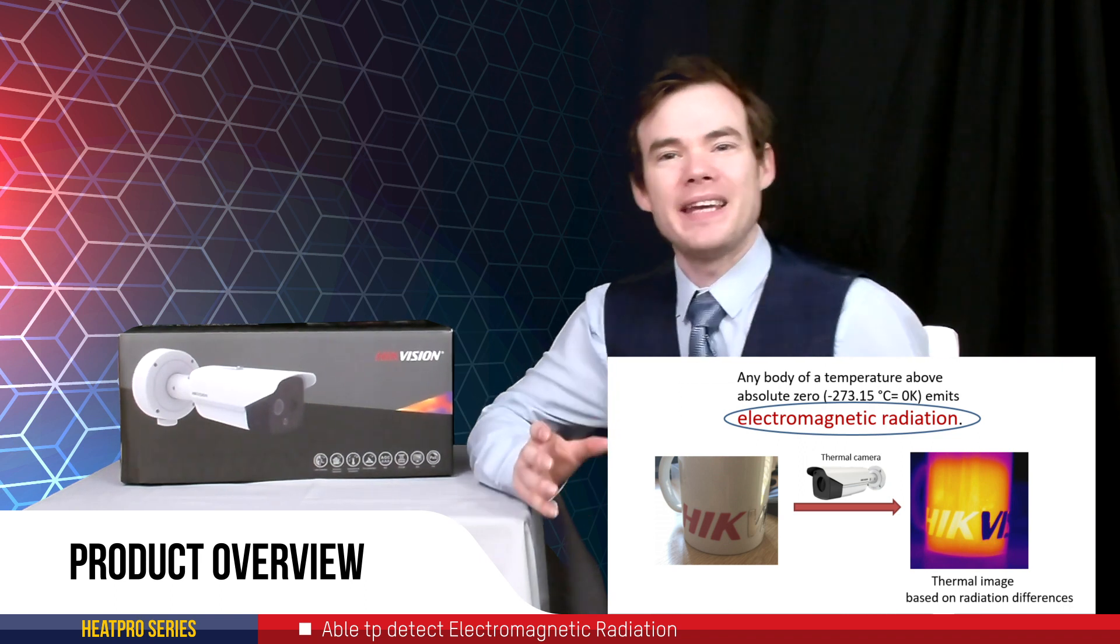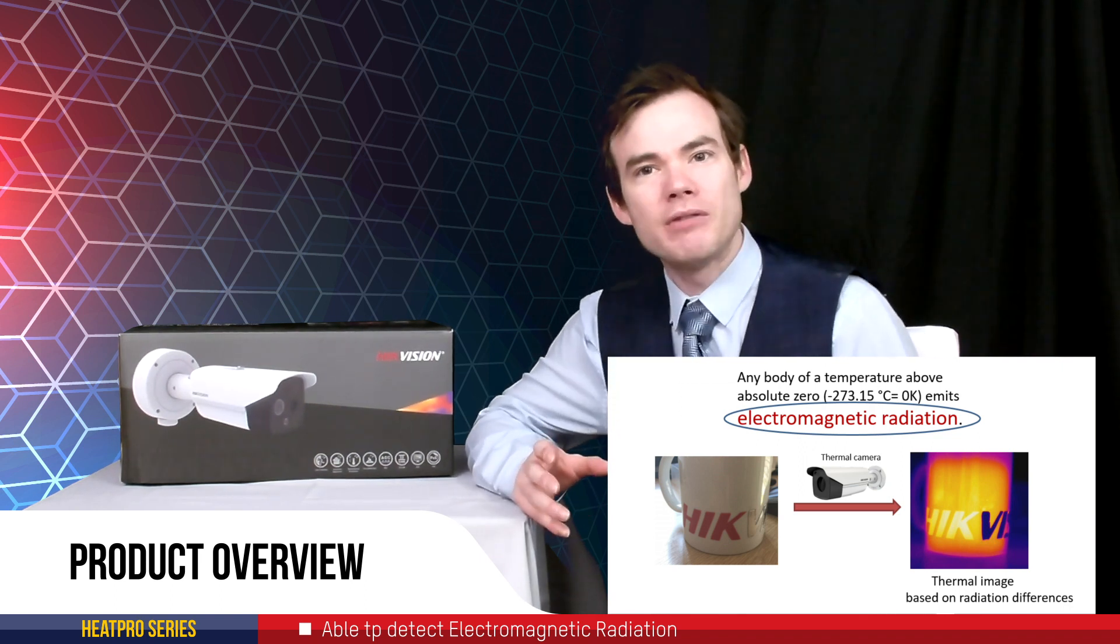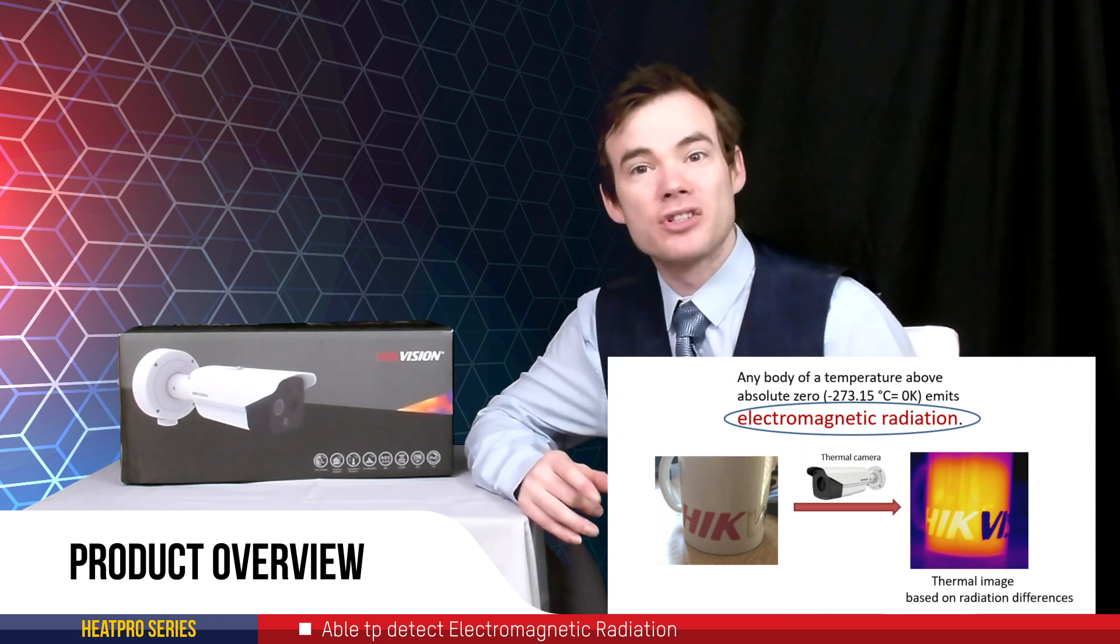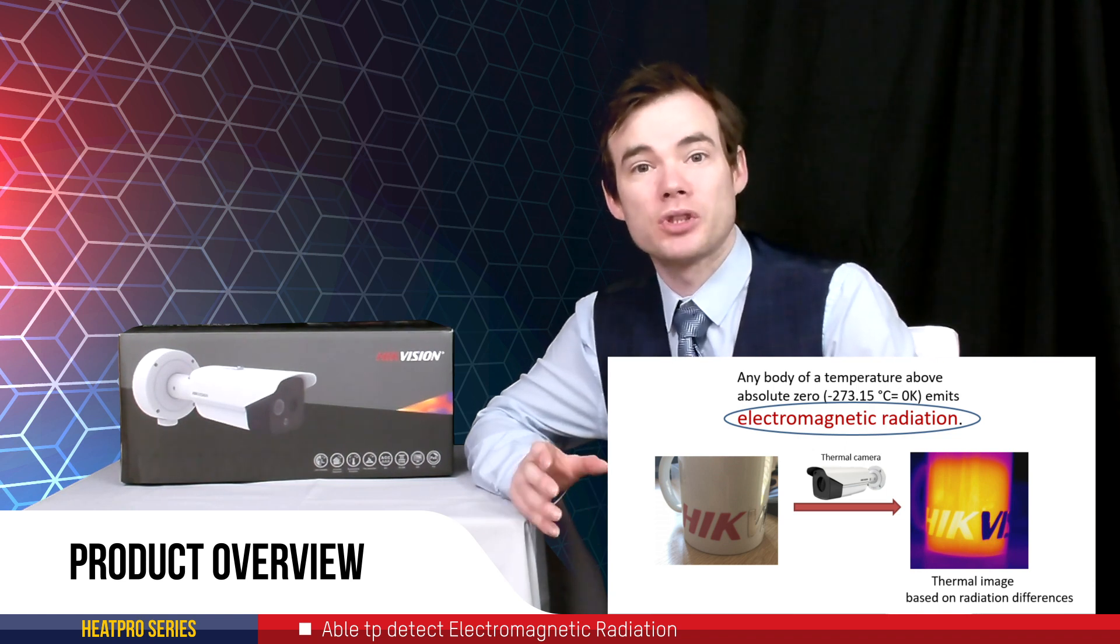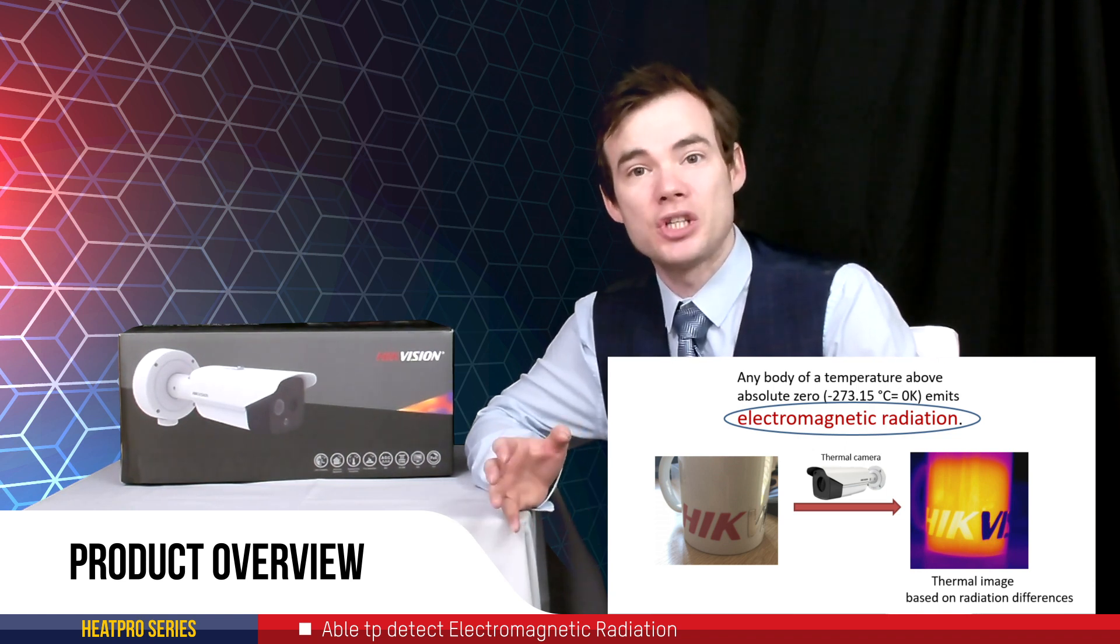So basically every body of temperature above zero degrees Kelvin, that's minus 273 degrees Celsius, emits what's called electromagnetic radiation.